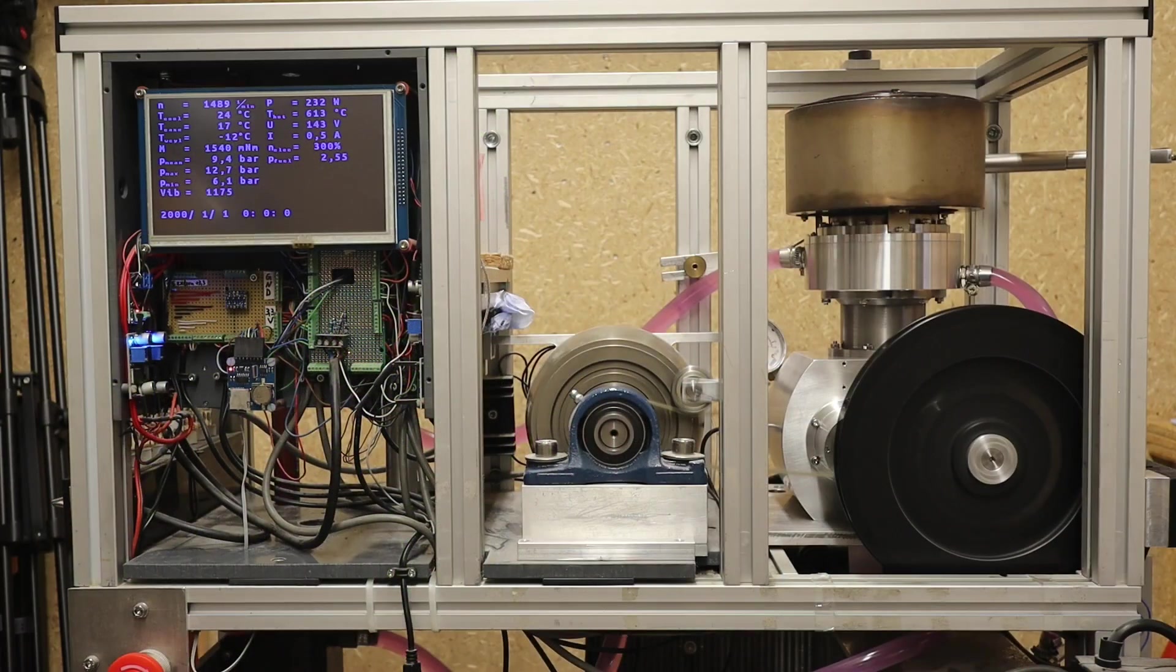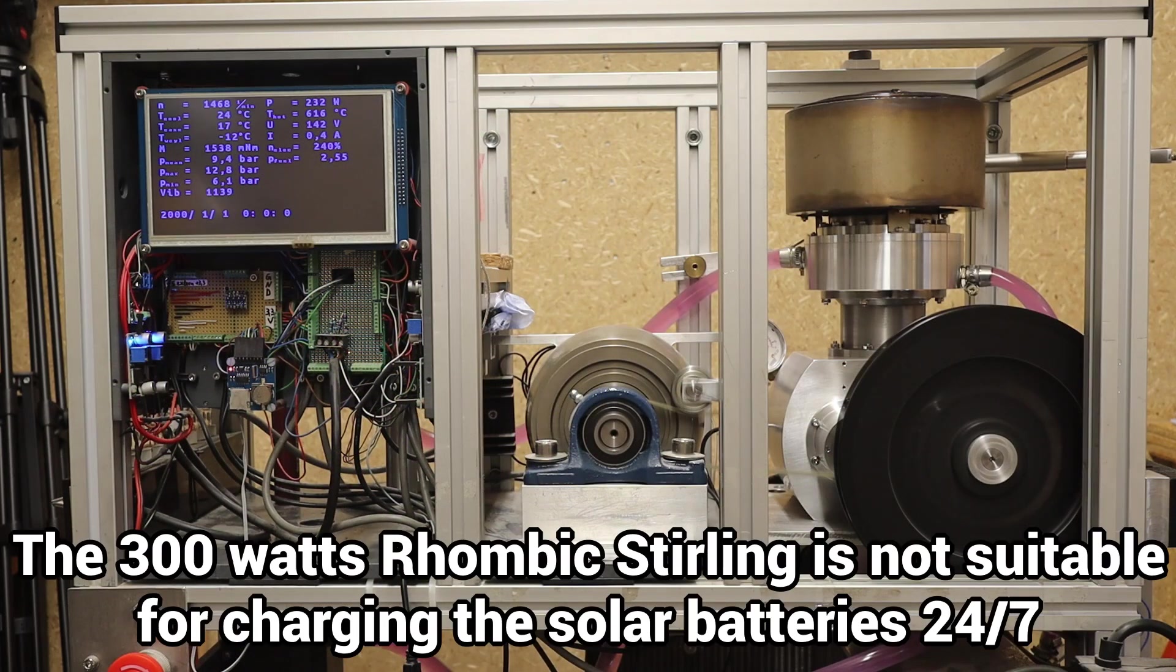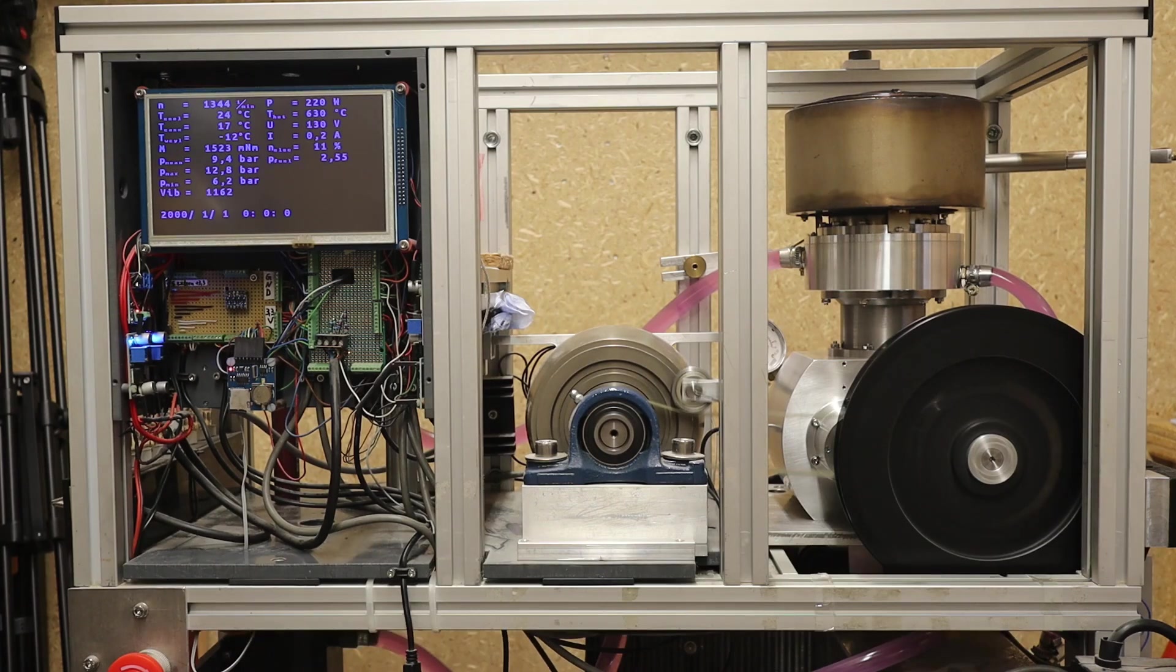The rhombic Stirling has an output of 300 watts but requires too much maintenance to charge the solar battery around the clock in continuous operation.